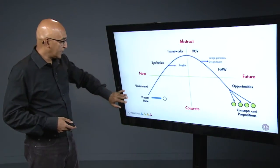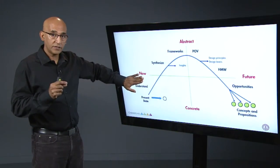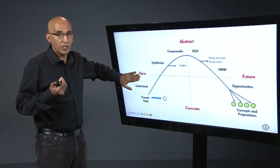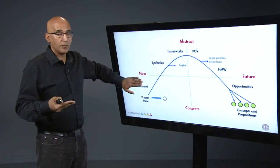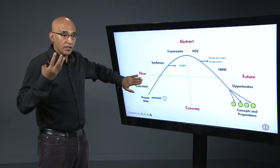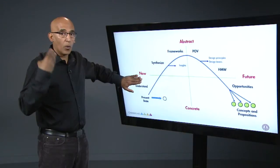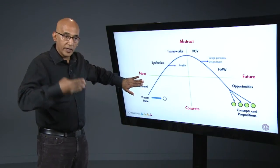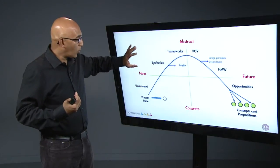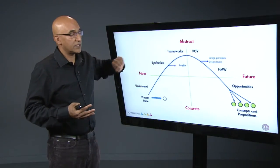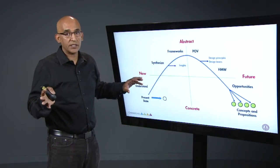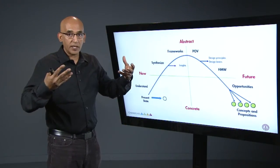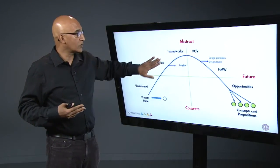The arc begins with understanding the problem — many aspects of it, but very importantly the human elements. Apart from other aspects of the problem, it is extremely important to understand the behavioral aspects, the social aspects, what is going on in people's minds. The techniques you use here are ethnography — going in and speaking to people and trying to understand what's going on in their minds. Once you generate that information, you do synthesis, which is essentially taking a step back, looking at many pieces of information, and doing sense-making in order to figure out what's really going on.